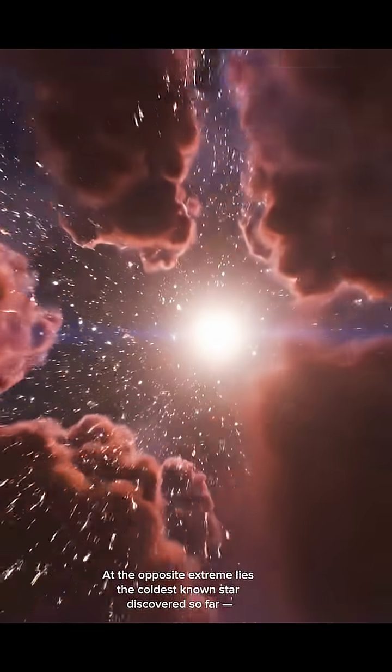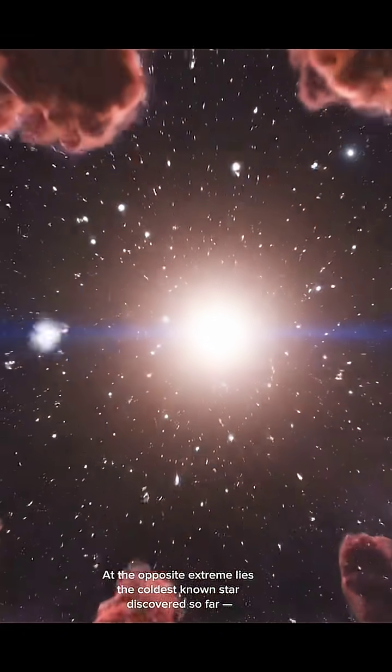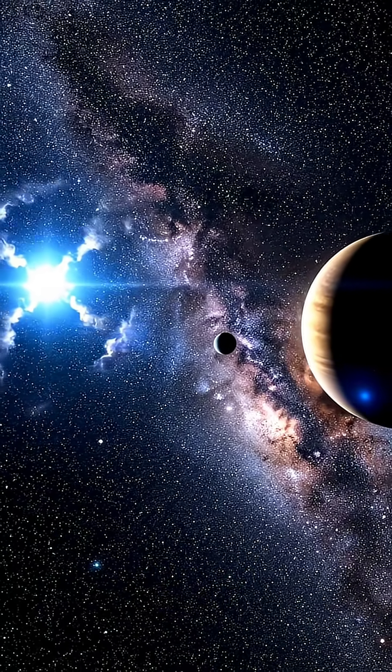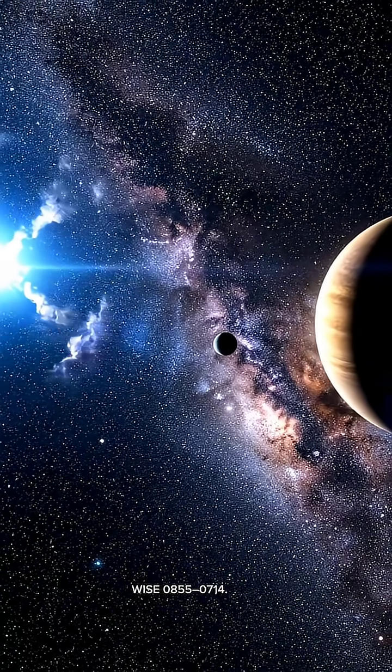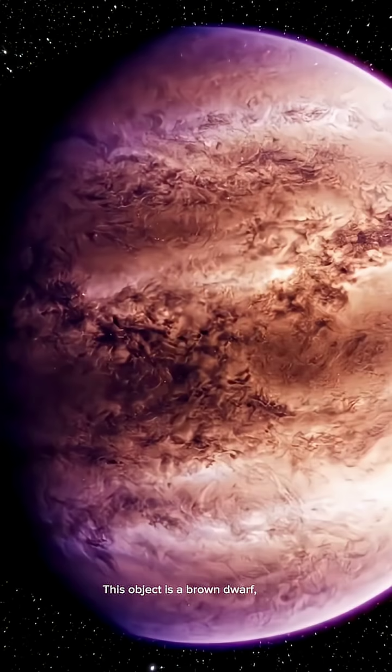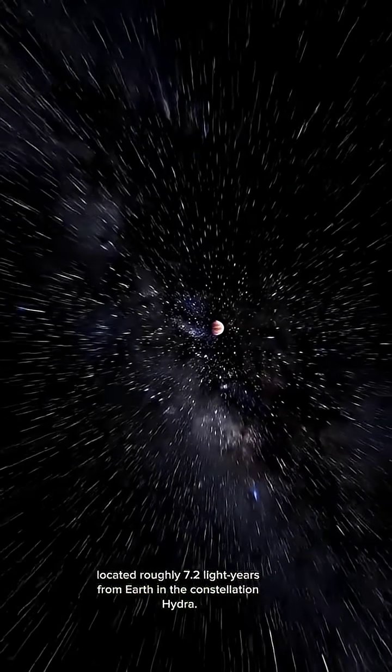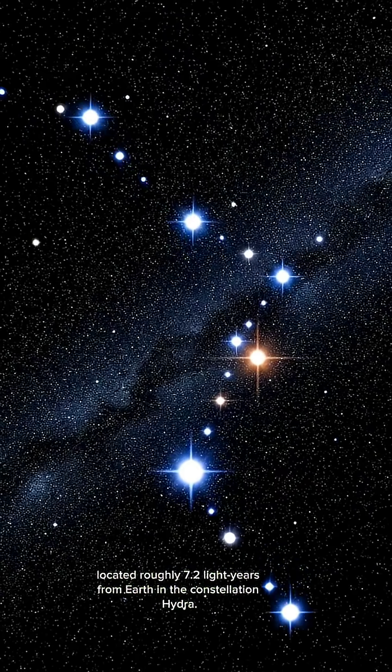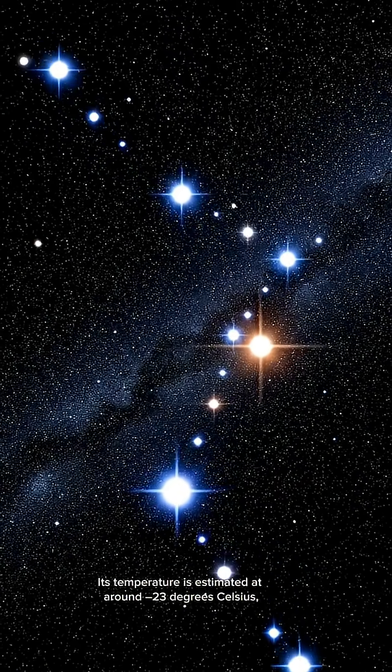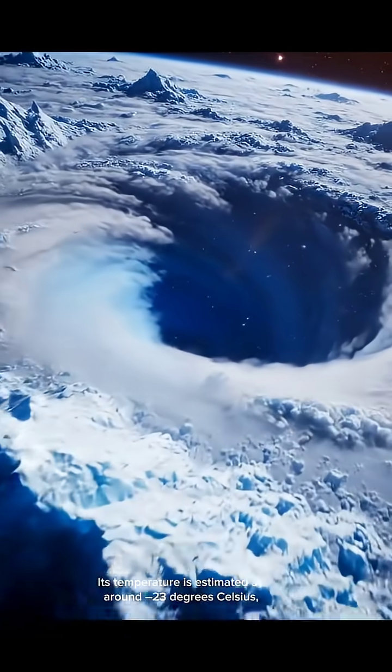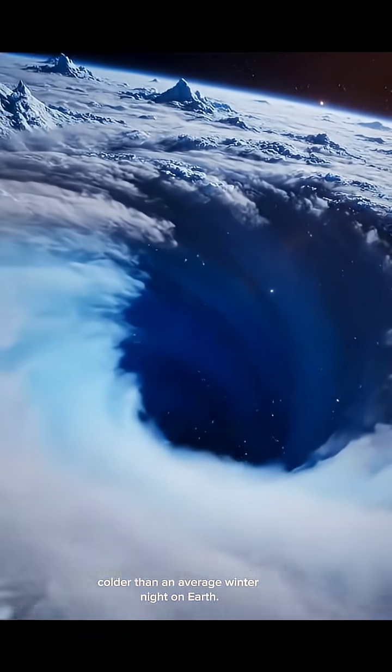At the opposite extreme lies the coldest known star discovered so far: WISE 0855-0714. This object is a brown dwarf located roughly 7.2 light years from Earth in the constellation Hydra. Its temperature is estimated at around minus 23 degrees Celsius, colder than an average winter night on Earth.